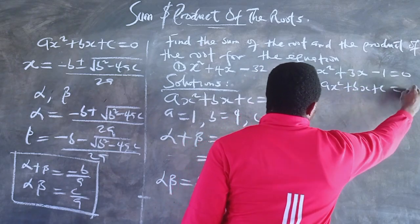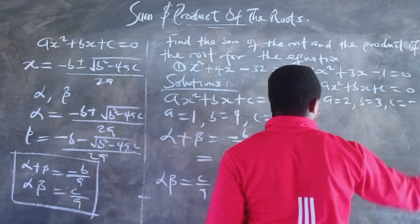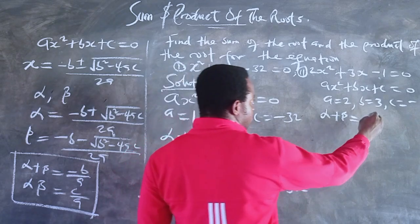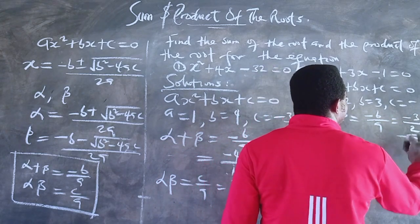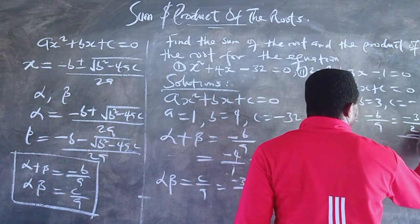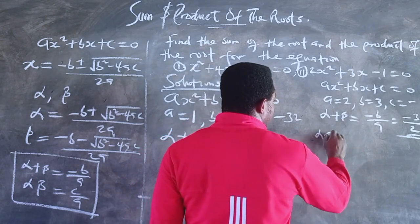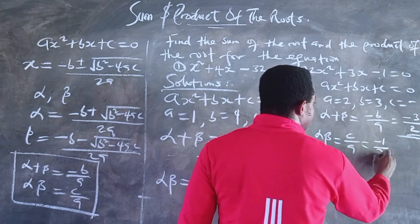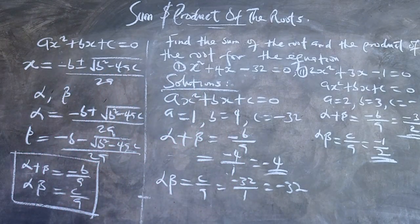For the second problem, comparing with the standard form ax² + bx + c = 0, we identify a = 2, b = 3, and c = -1. The sum of the roots, alpha + beta = -b/a = -3/2. The product of the roots, alpha × beta = c/a = -1/2. This is how to find the sum and product of the roots without solving the quadratic equation.